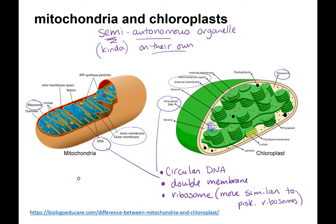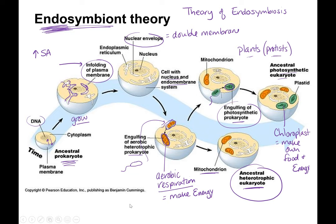The last bit of evidence supporting the endosymbiont theory is that the size of mitochondria and chloroplast is similar to that of a prokaryote — they're about the size of bacteria. So we've got circular DNA, a double membrane, prokaryotic-like ribosomes, and similar size, all contributing to the idea that these were once free-living prokaryotes that were taken into a larger cell and started working together — and lived happily ever after.